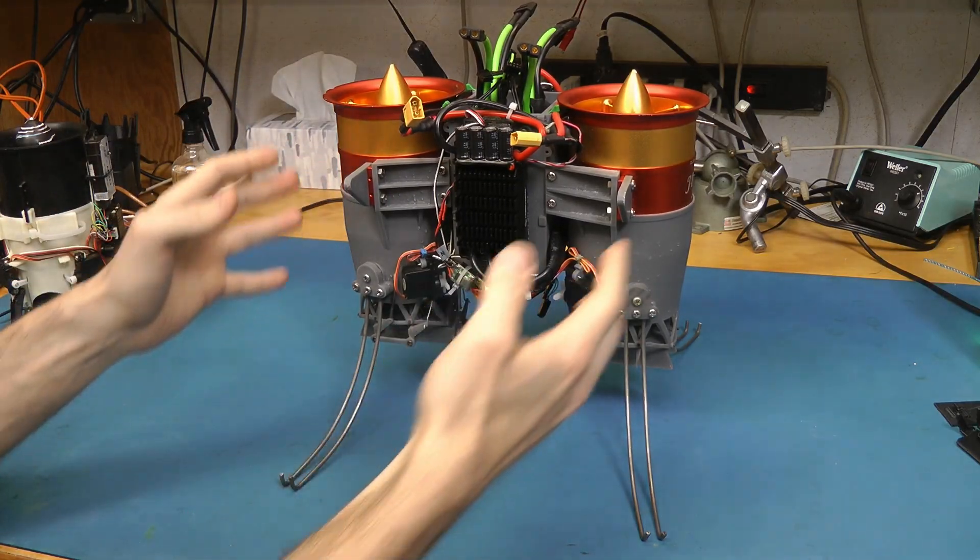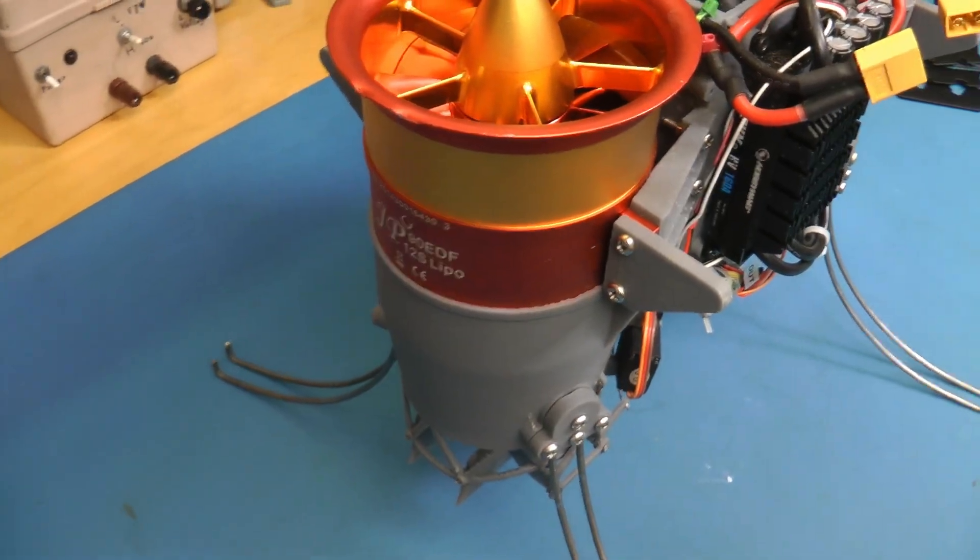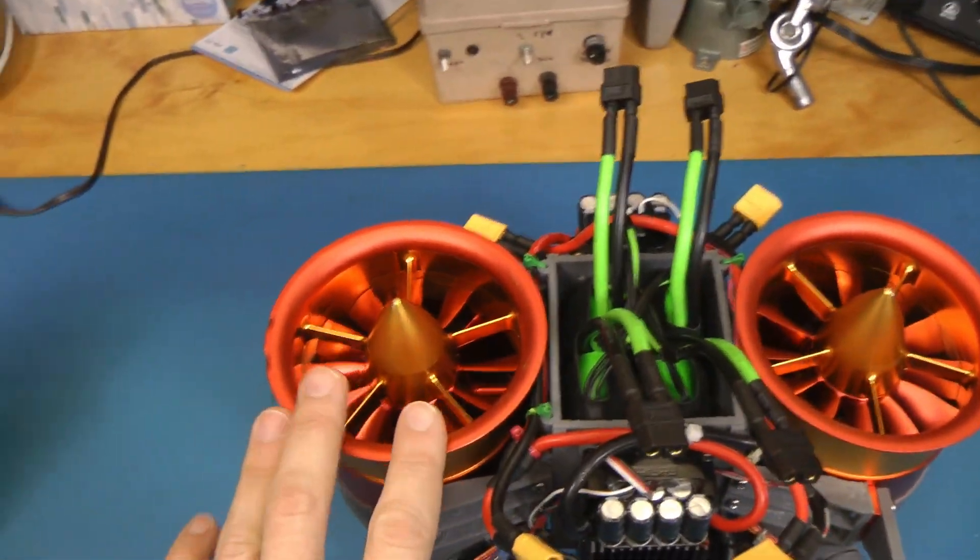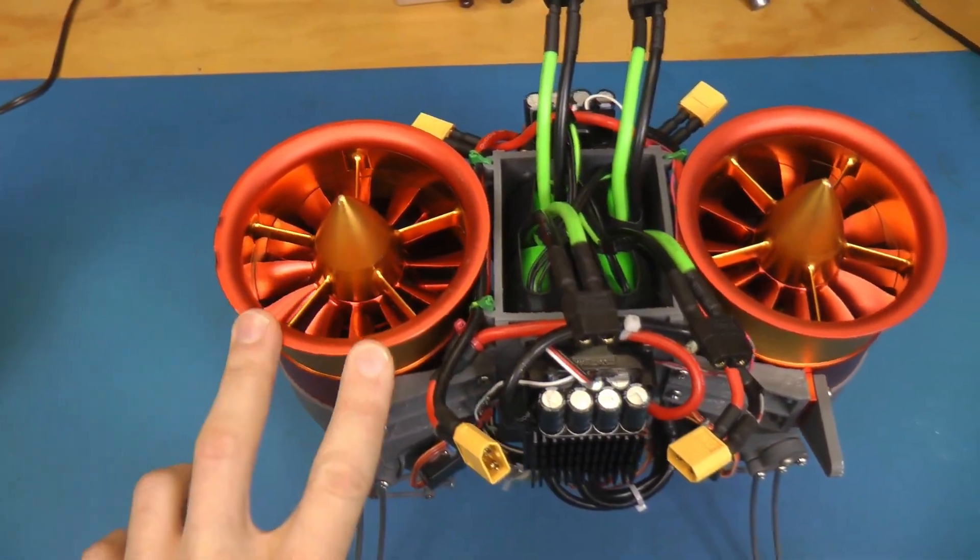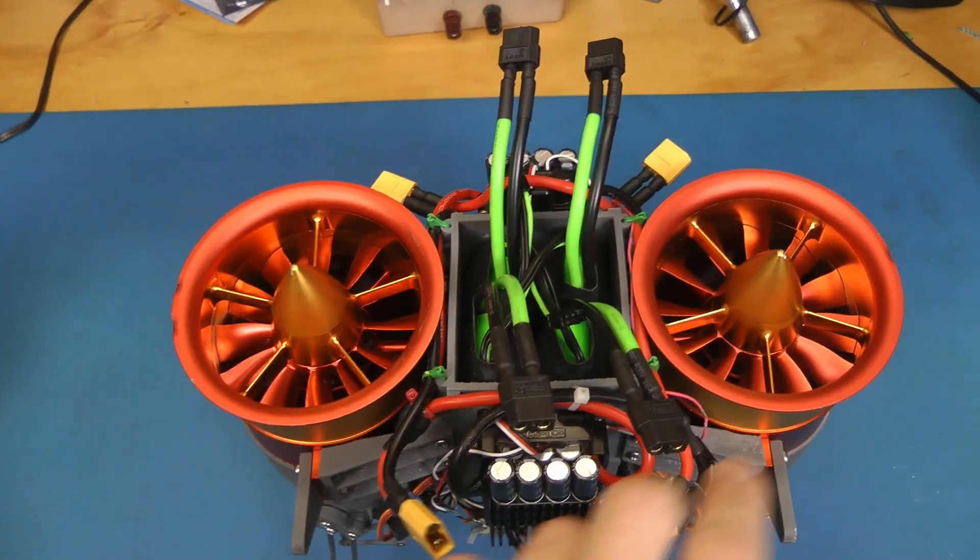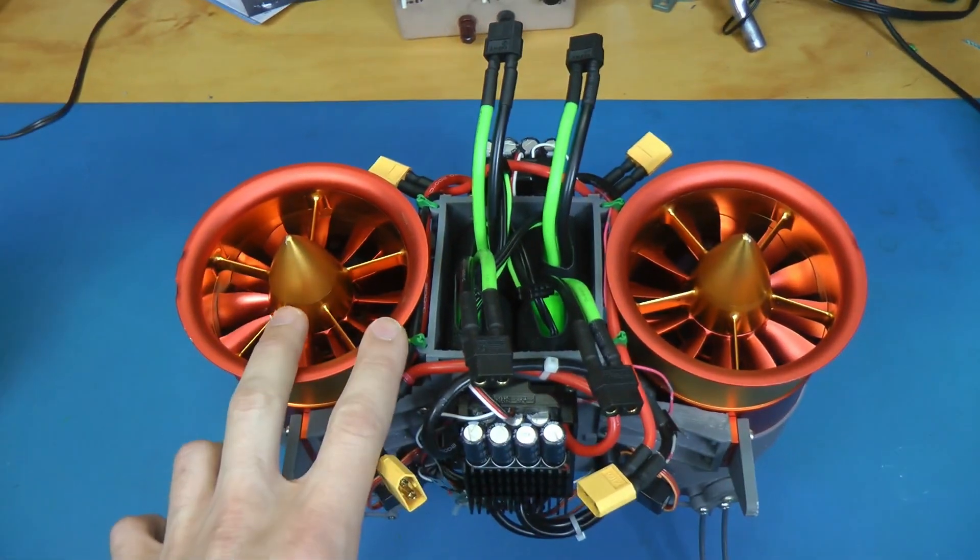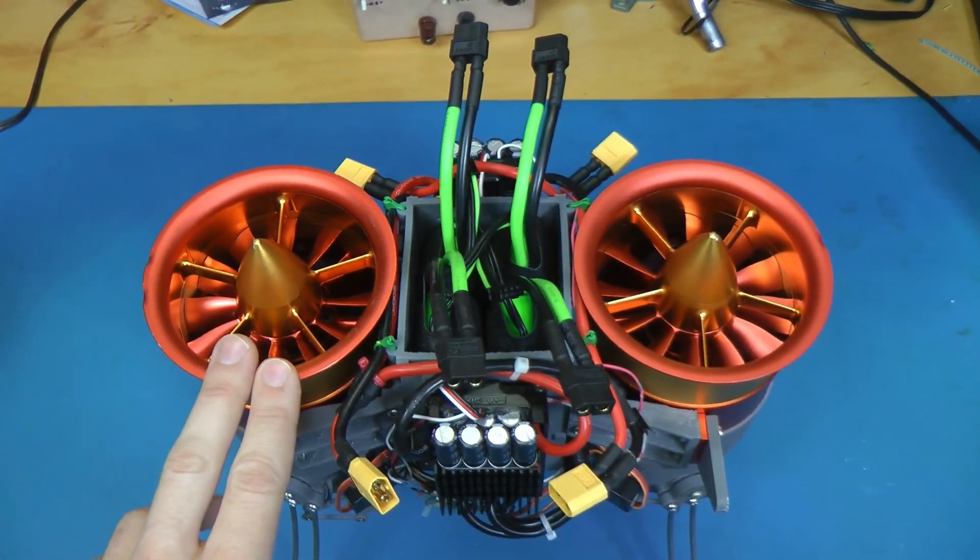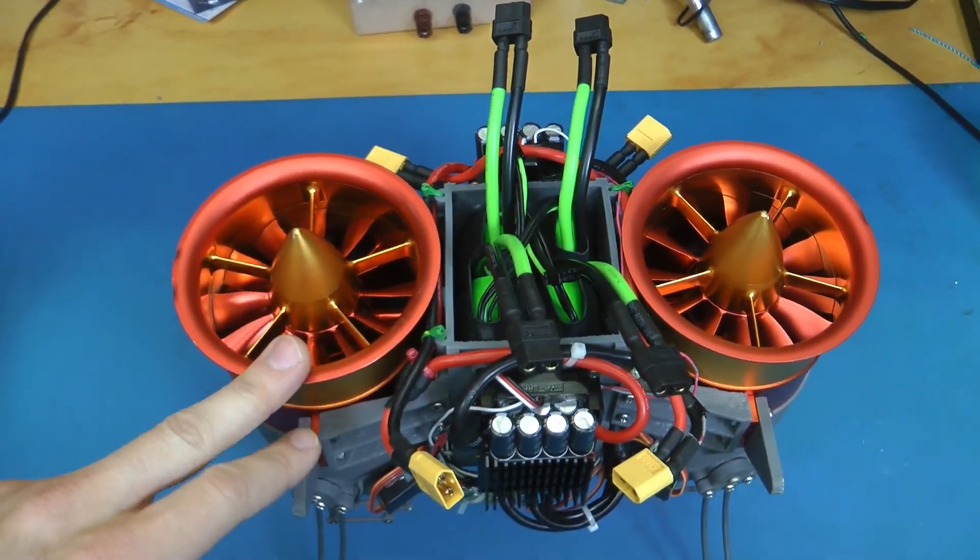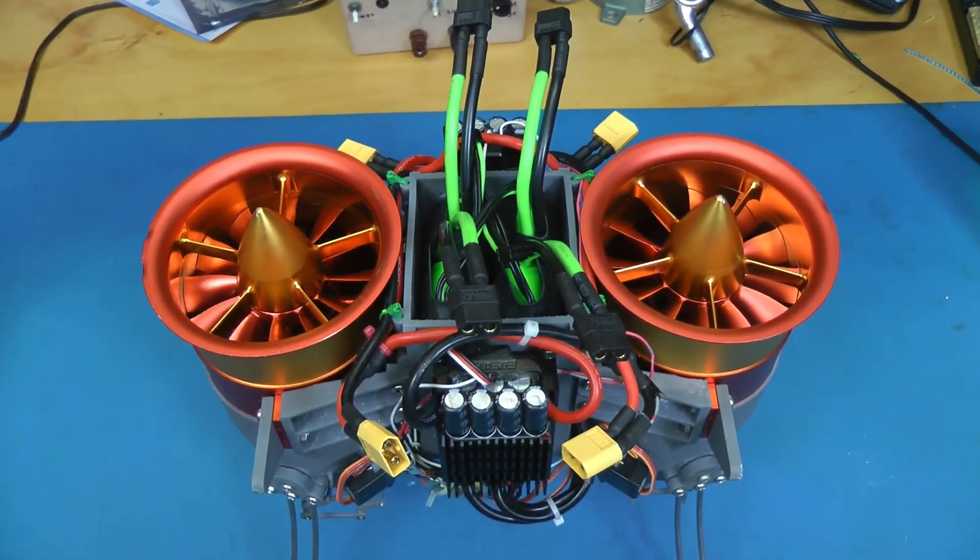I wanted to solve a lot of the problems that plague this, and Icarus 2 has solved a lot of them simply by doubling everything. I've upgraded to these JP Hobby EDFs. They're one of the few ones I could find that actually have counter-rotating versions. You can see these two are mirror images of each other, and that's completely solved the gyroscopic precession problem.